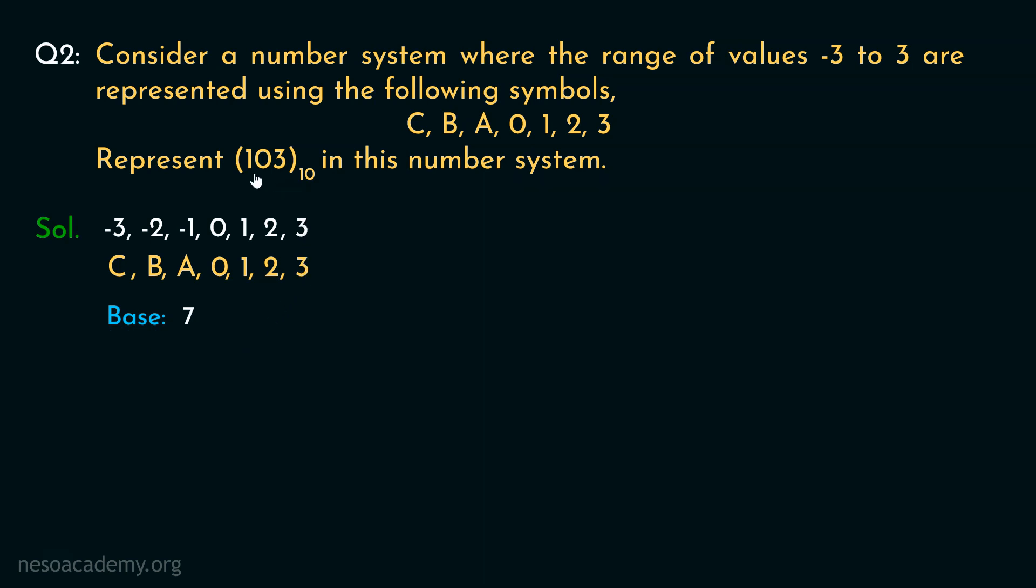Now we are to represent this 103 of decimal in the number of base 7. So how will we carry out the conversion? Well, it's simple. We will take 103 and start performing the integer factorization by 7. Now 7 times 15 is 105. So here we will get the remainder as minus 2. Now worry not, our number system can represent the value of negative 2 and it's represented by the symbol b. So the obtained remainder would be b.